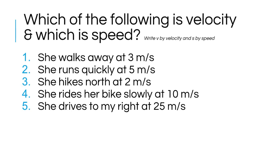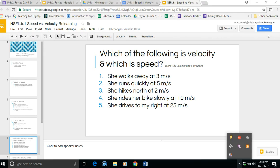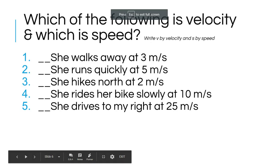Take a minute and look at these five things: she walks away at three meters per second, she runs quickly at five meters per second, she hikes north at two meters per second, she rides her bike slowly at 10 meters per second, and she drives to my right at 25 meters per second. Go ahead and pause the video and label which of these describes speed and which describes velocity.